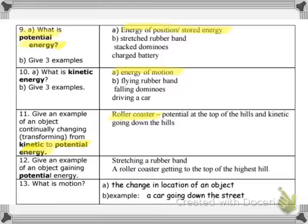Alright, number twelve, give an example of an object gaining potential energy. Stretching a rubber band, the more you stretch it, the more potential energy is gained. A roller coaster getting to the top of the highest hill. The higher something is, the greater the potential energy, because there is more room for gravity to pull it down towards the earth. Okay, so the highest hill, or just lifting up something higher. Okay, my dog is sitting in my lap, so if you hear noises, it's my dog. Alright.